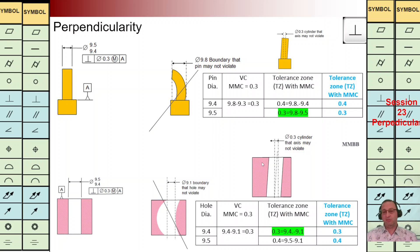The axis of this hole should be within that volume — in this way we are going to control the orientation of this hole. As we can see at bottom right, we have a modifier, which means for the hole we are going to consider the smallest diameter of the hole, giving us maximum material condition. As highlighted in green in the third column, for the value 9.4 we are going to have TZ 0.3. For other values of diameter we can calculate the value of TZ; those are listed in the last column in blue color.